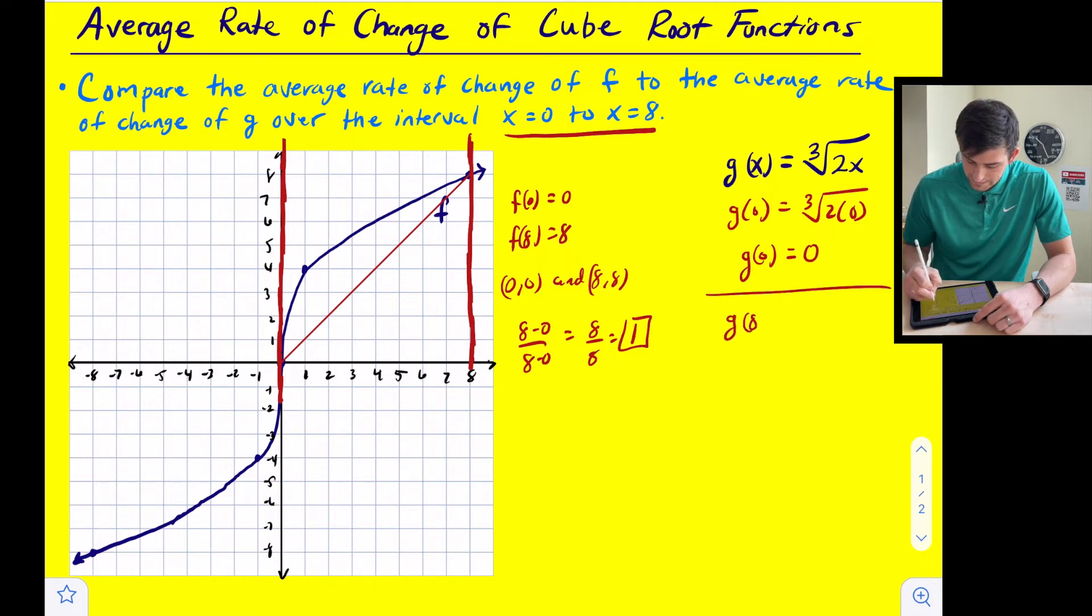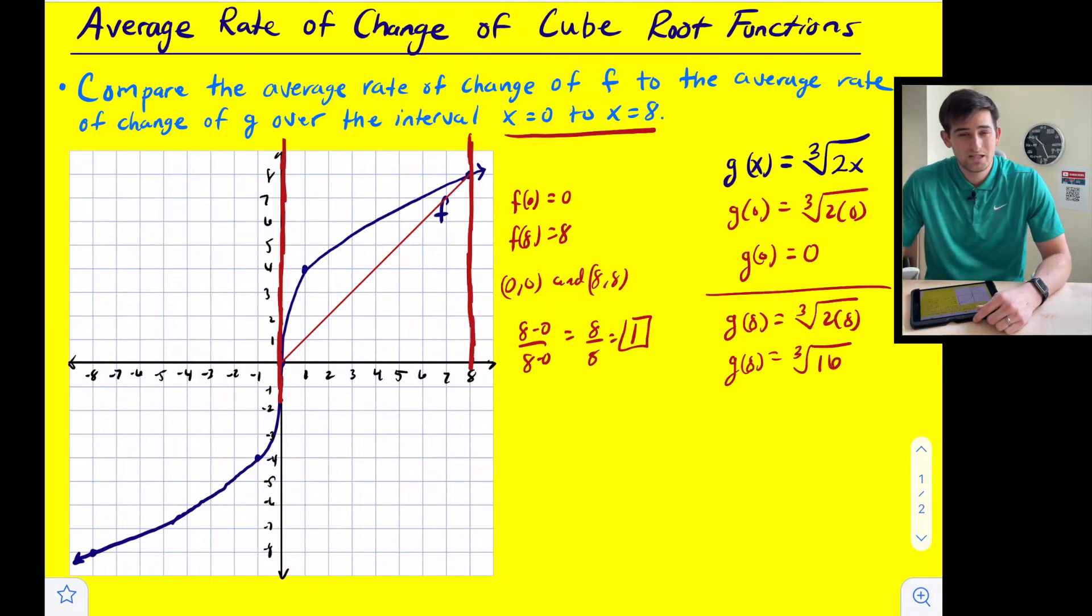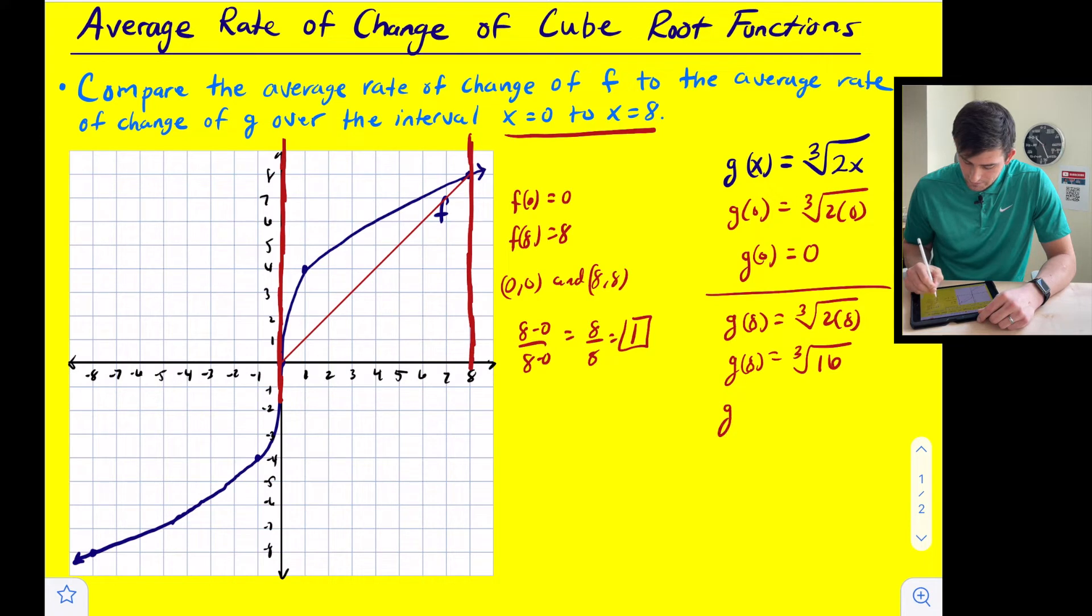Okay, so now we're going to plug in 8. So the cube root of 2 times 8, and that would give us the cube root of 16. Now 16 is not a perfect cube, but it can be simplified. So we can simplify this because the cube root of 16 is the same as the cube root of 8 times 2. And the cube root of 8 is a perfect cube. So now this would be 2 cube root of 2.